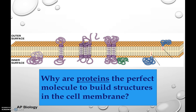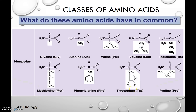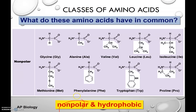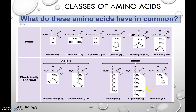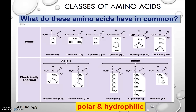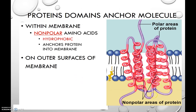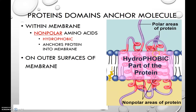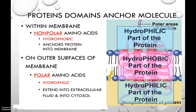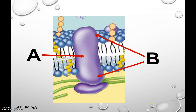Why are proteins a perfect molecule to build structures in the cell membrane? If you remember amino acids, some are nonpolar and hydrophobic, and some are polar. This is perfect because as the protein folds up, the hydrophobic amino acids end up in the middle of the membrane, and the polar or hydrophilic amino acids are found in the polar region of the protein — matching the structure of the lipid bilayer perfectly.